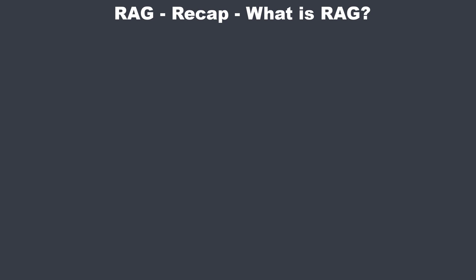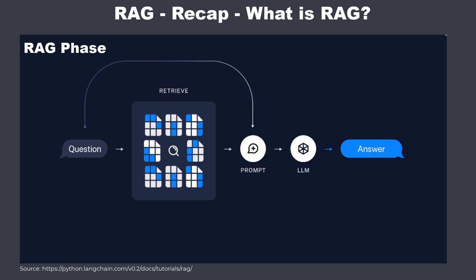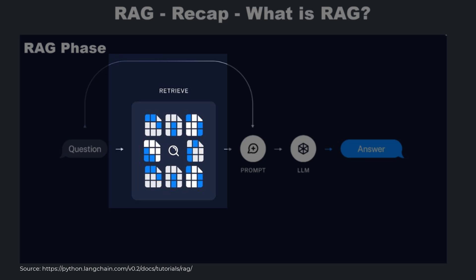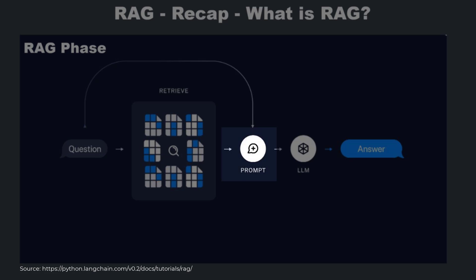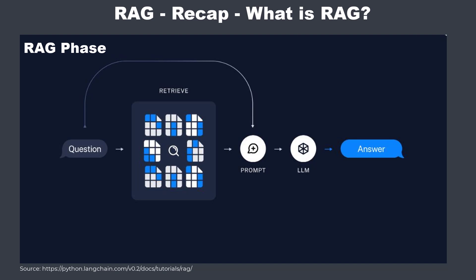After that, a user can ask a question. That question gets embedded by an embedding model. We make a similarity search against the vector store, retrieve the most relevant documents, and pass everything — the history, the question, and the documents — to the LLM, which creates a final answer for the user.